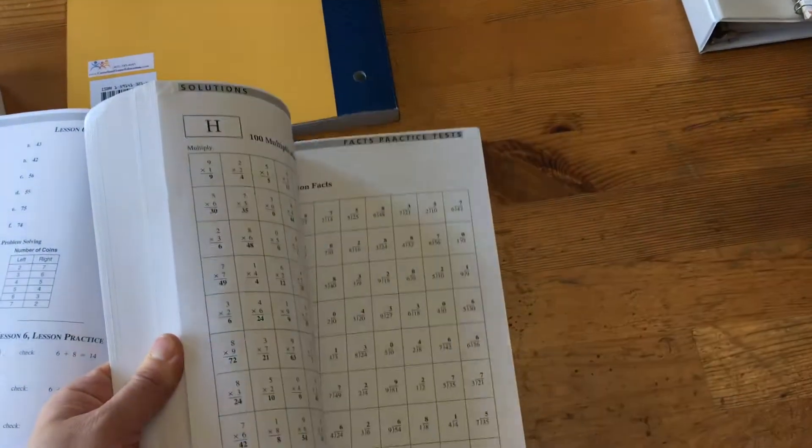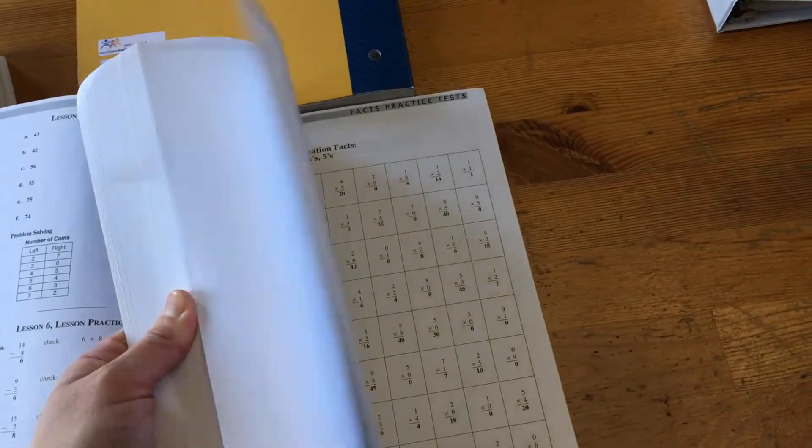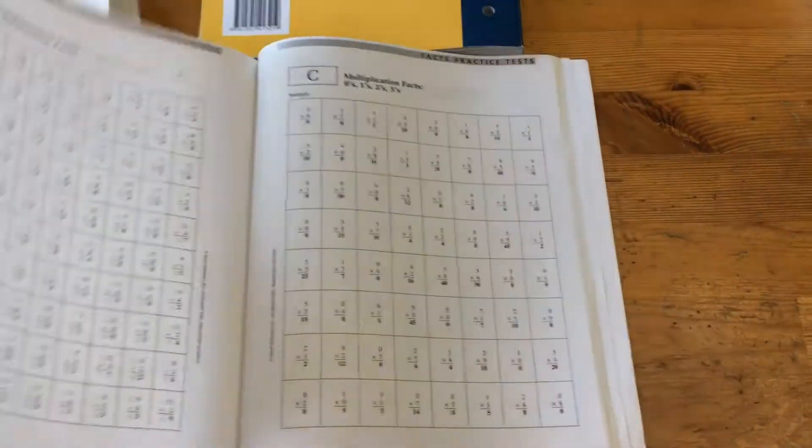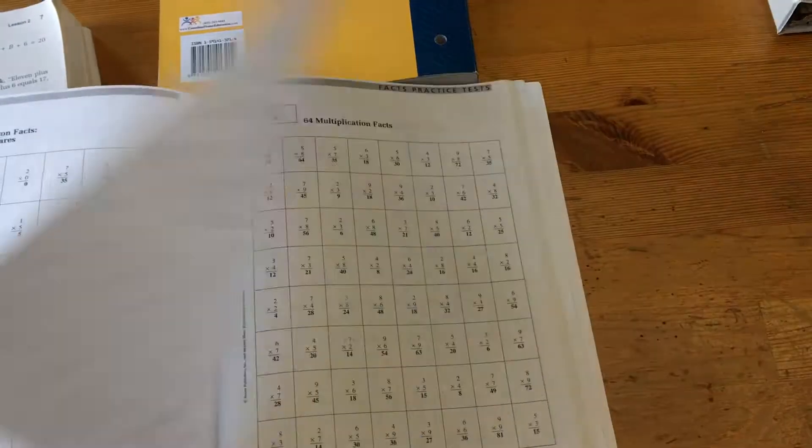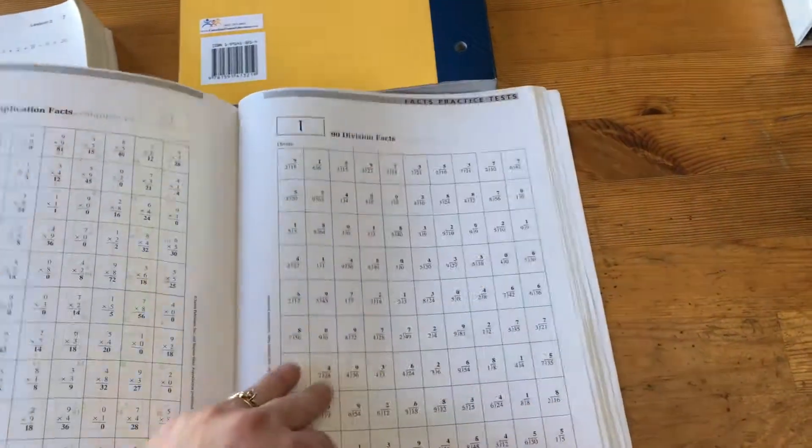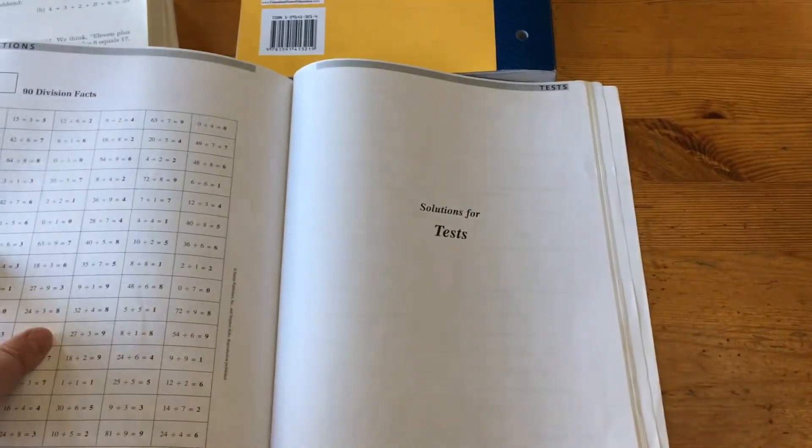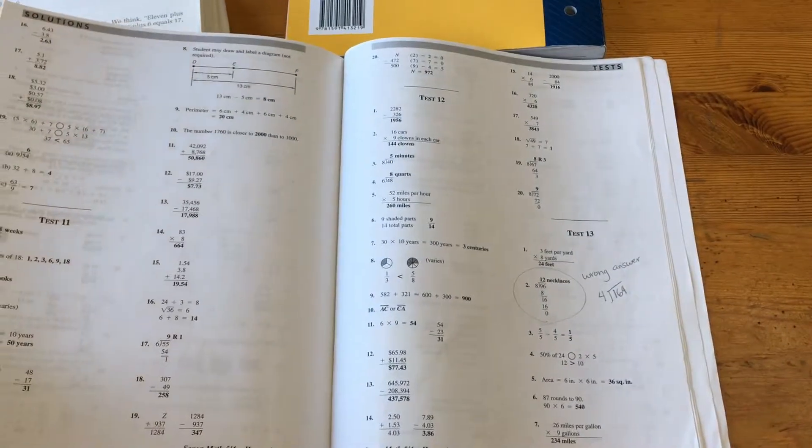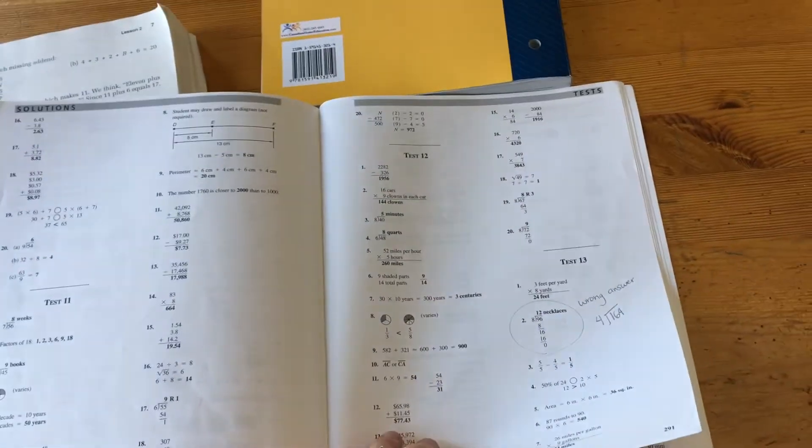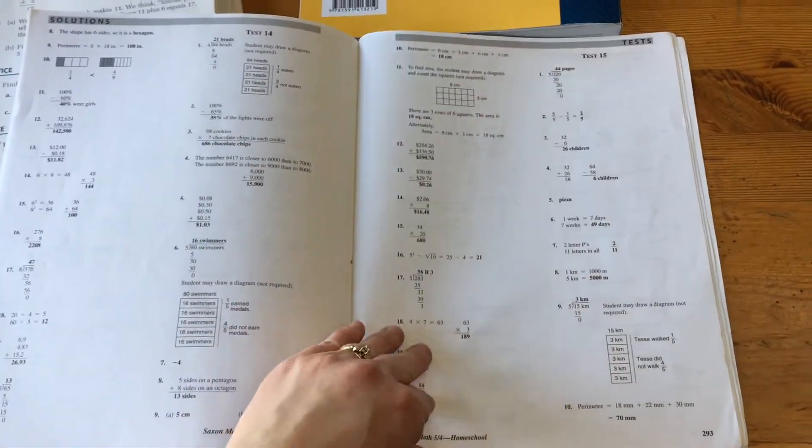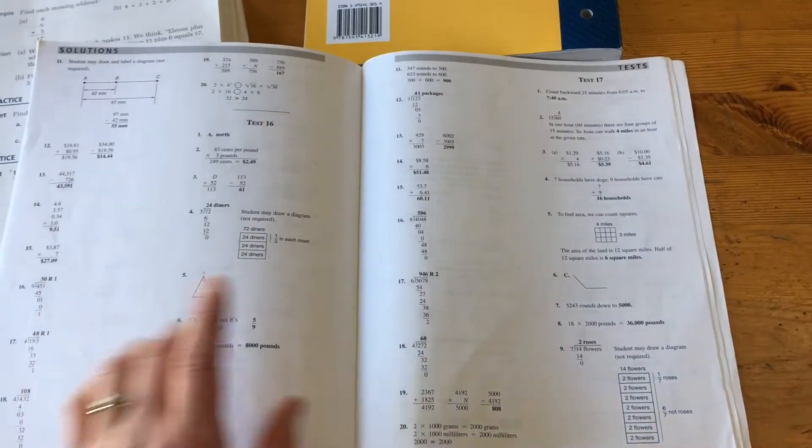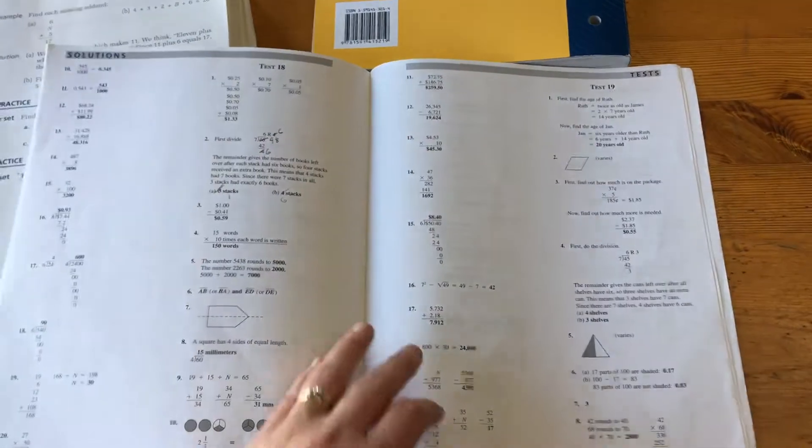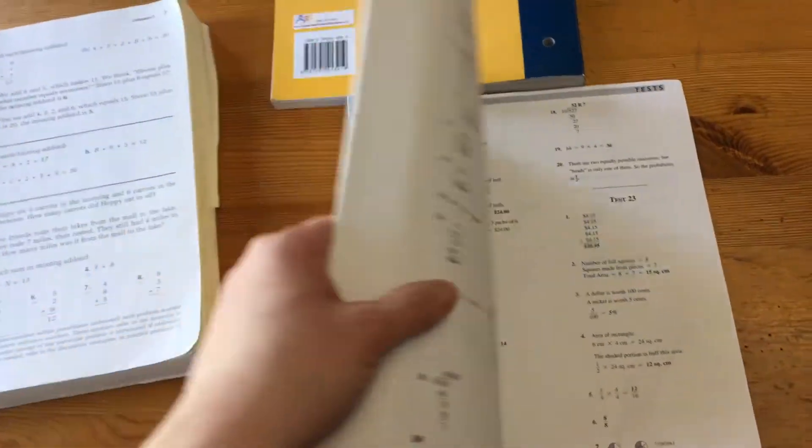But then at the back here, they have the solutions to all of these fact sheets. So you're able to mark them real quick if you need to. So that's A through J. And then here, they have all the test answers at the very back here. We did find a few wrong answers over two times we've done this. So there are a few. But for the most part, they're right. That is the solutions manual there.